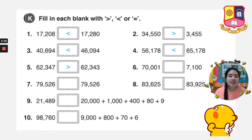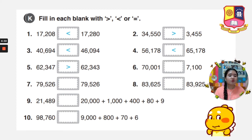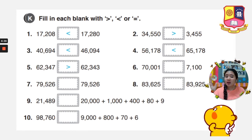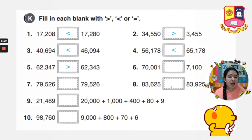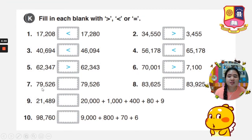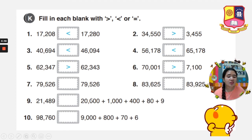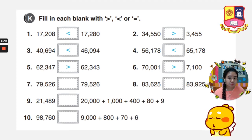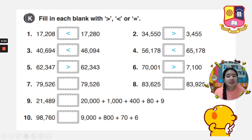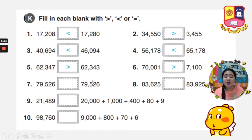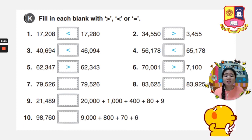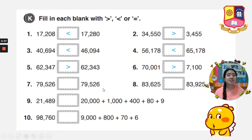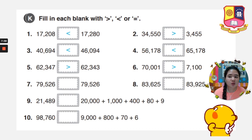Number 6: 70,001 and 7,100. We have 5 digits and 4 digits, so a 5-digit number is bigger than a 4-digit number. The mouth is at 70,001. Number 7: We have 79,526 and 79,526. All digits are the same — 7 and 7, 9 and 9, 5 and 5, 2 and 2, 6 and 6 — so we know already that it is equal.